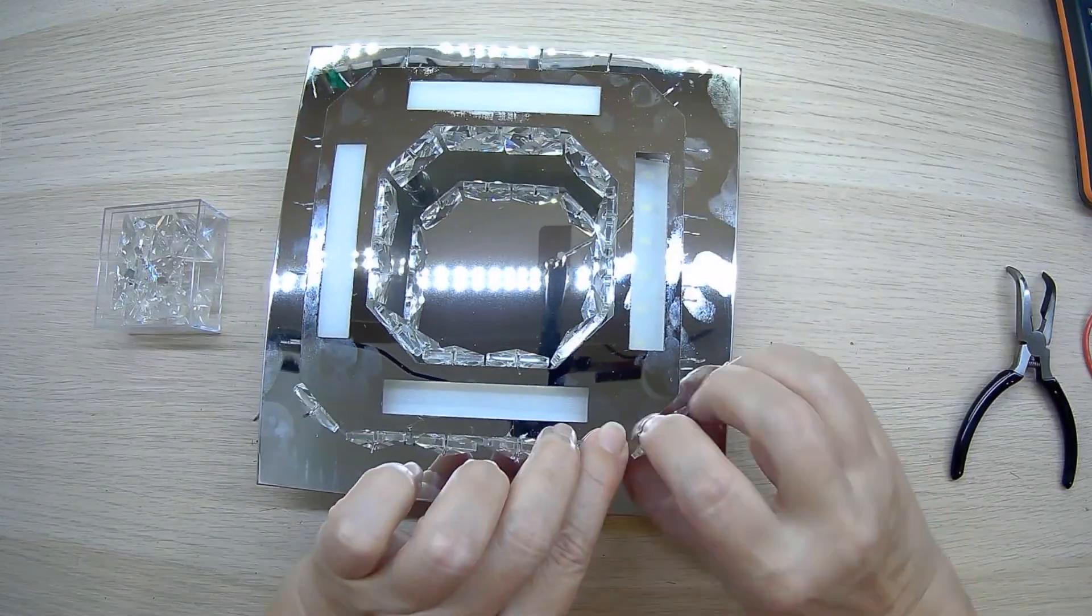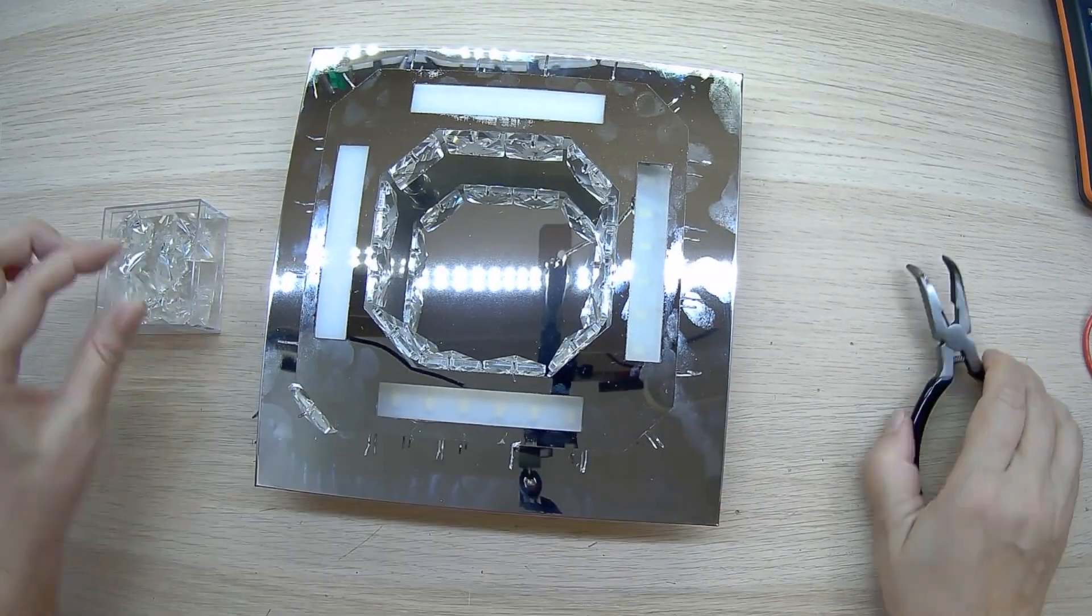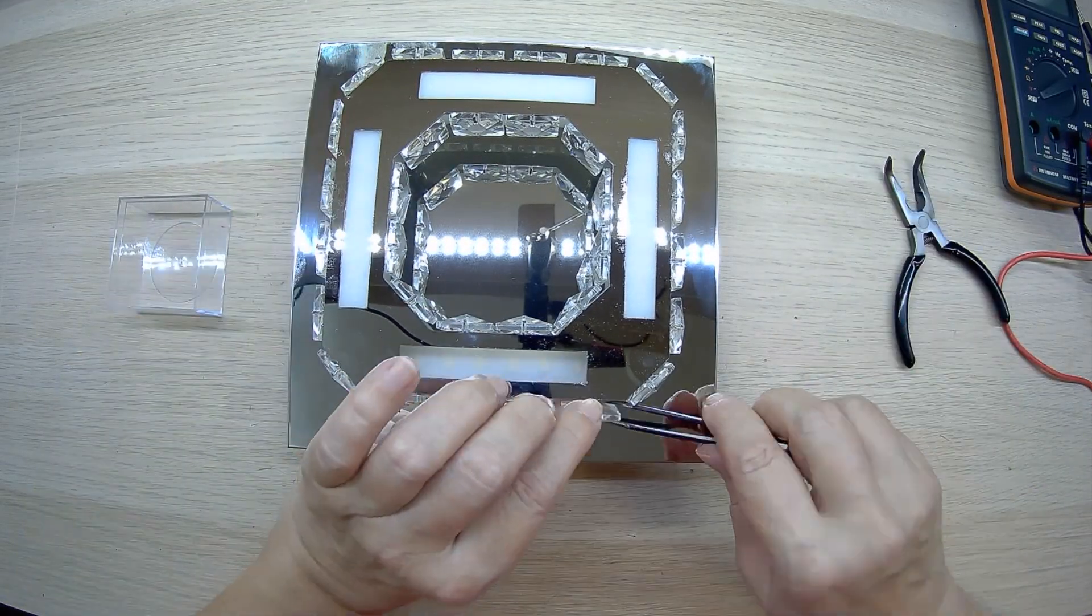To find a fault in the LED strip, we need to disassemble the light fixture. This is the most time-consuming part of the job.